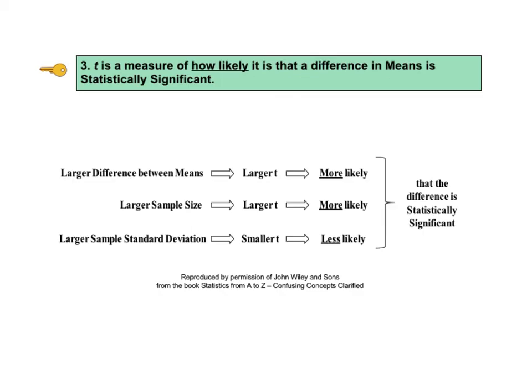The third key to understanding says t is a measure of how likely it is that a difference in means is statistically significant. As with all test statistics, we compare t to its critical value in a statistical test. The value of t is calculated from sample data as shown in the formulas on earlier slides. The value of t critical is determined by the value selected for alpha, the significance level, and the appropriate t distribution.